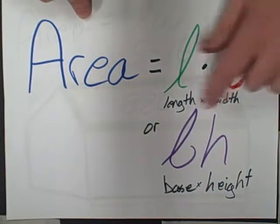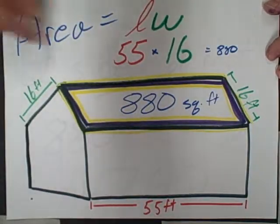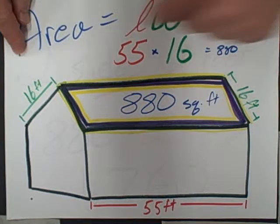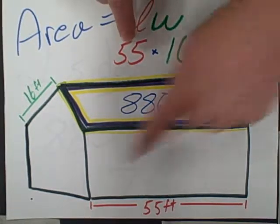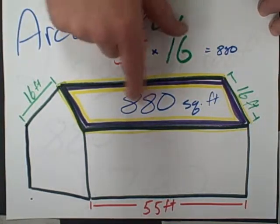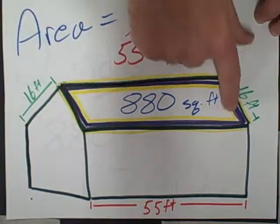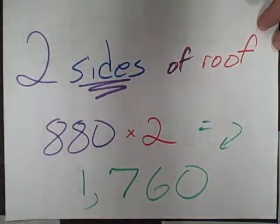With this house, specifically the roof, we're going to find the area: length times width. The length is going to be 55 feet times the width of 16, and 55 times 16 is 880. So this side of the roof is 880 square feet. Don't forget that the roof has two sides, so we're going to multiply 880 times 2 for a total of 1,760 square feet.